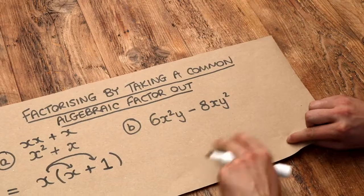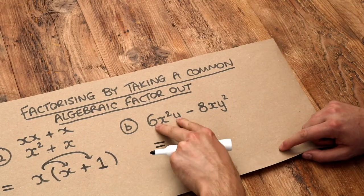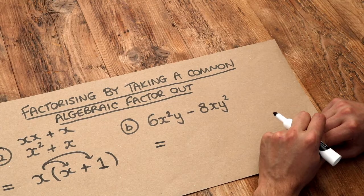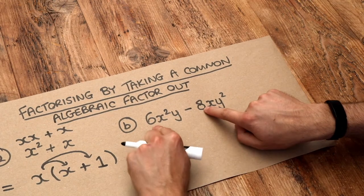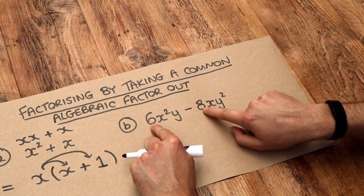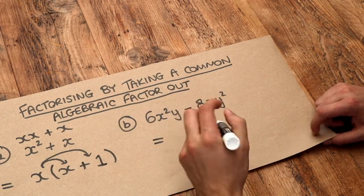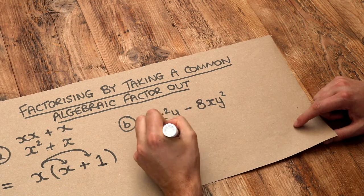What about this second one? Again we need to find what's common to both this and this term as well. Now I always start with the numbers because the numbers are in front of each term. 6 and 8. What factors do they have in common? Well they're both even so they're definitely going to have 2 as a common factor.